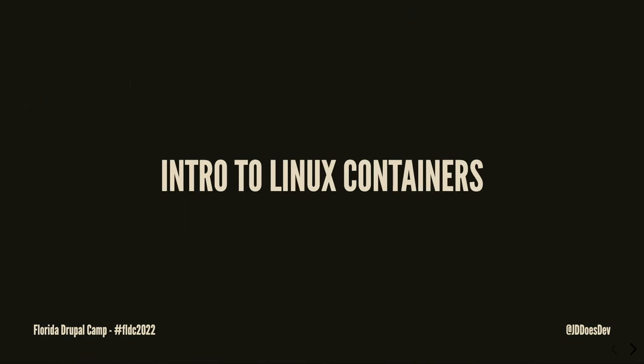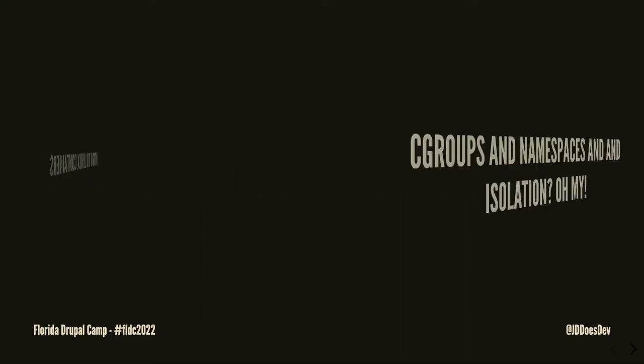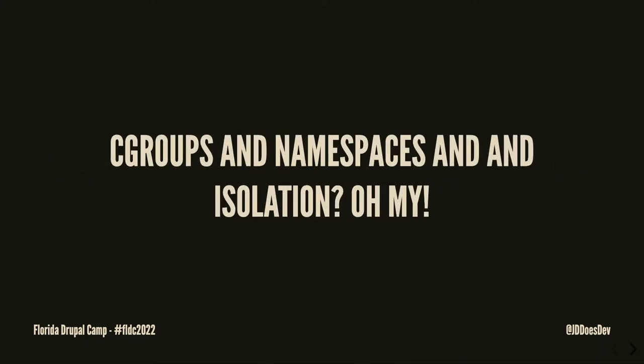We're not going to get too into the weeds here, but we wouldn't have Docker without Linux containers. Linux containers stemmed from something created by Google engineers in 2013 called control groups, or C groups. These allow isolation and control and limitation of resource usage for user processes. These processes can be grouped together into namespaces to share resource limitations.